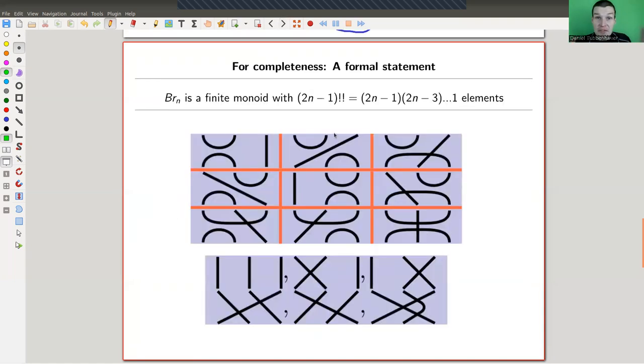Now we have an object of monoid theory, an object of combinatorics. This is really a finite monoid. And you could count the number of elements. So here we have three strands. So Br3. And I claim it should have this number of elements. It's five double factorial. The double factorial is not the factorial of the factorial. It's the following version of the factorial, a factorial where you go in steps of two. So it's just five times three times one, which hopefully is 15. And if I haven't miscounted, there are 15 pictures.